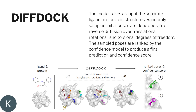DiffDock randomly samples the initial poses via reverse diffusion over all the sites, covering translational, rotational, and torsional degrees of freedom — that is, X, Y, Z and R. The sampled poses are then ranked by a confidence model to produce the final prediction and the confidence score, as you can see here.